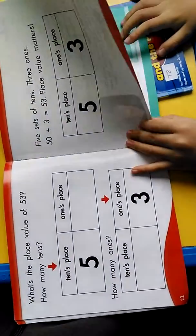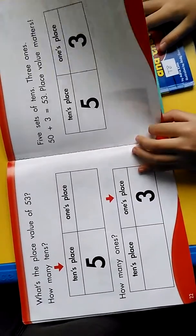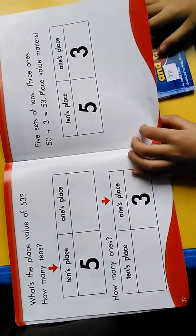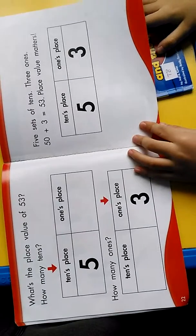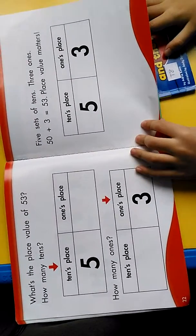What's the place value of fifty-three? How many tens? How many ones? Five sets of ten, three ones. Fifty plus three equals fifty-three.